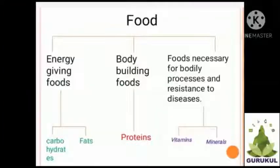Now tell me — do we get all the different constituents of food from a meal that consists of a green veg thalipit eaten with yogurt? Is it possible? No. Because we want all types of food items in our diet.